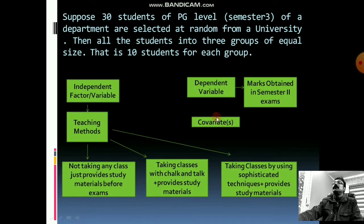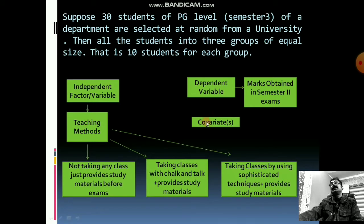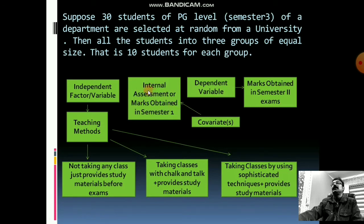If we control this confounding variable, we get a better result — that is, does there exist any difference in marks of the three groups due to differences in teaching methods? Including the covariate provides a better result. That is why analysis of covariance is sometimes treated as an extension of ANOVA, and it is very important. Marks obtained in semester one, or internal assessment, may be treated as the covariate.